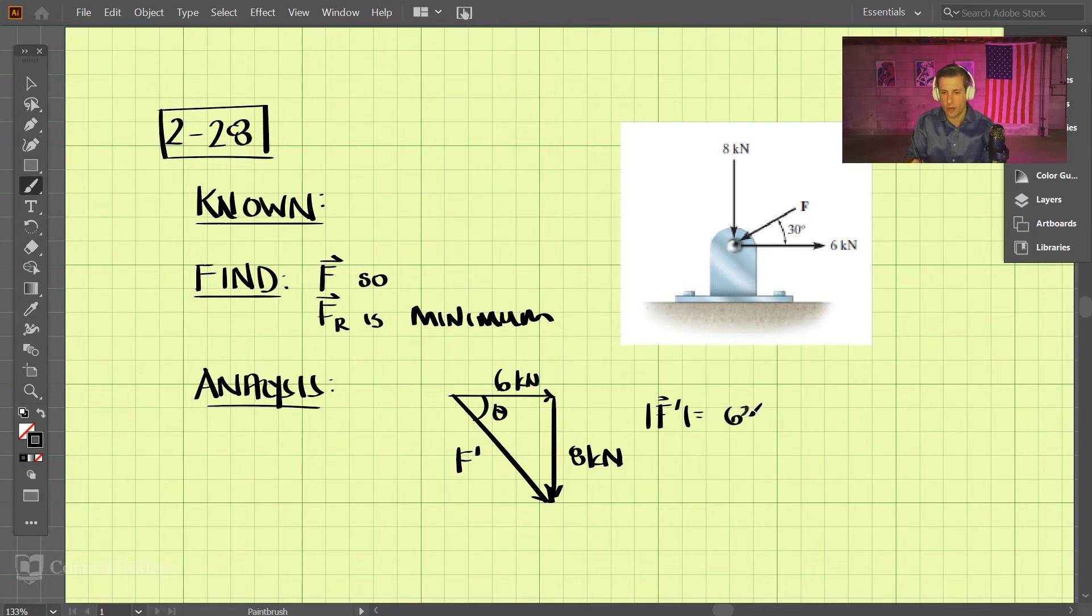So we have 6 squared plus 8 squared, that's 36 plus 64, square root of that, square root of 100, that comes out to be 10.